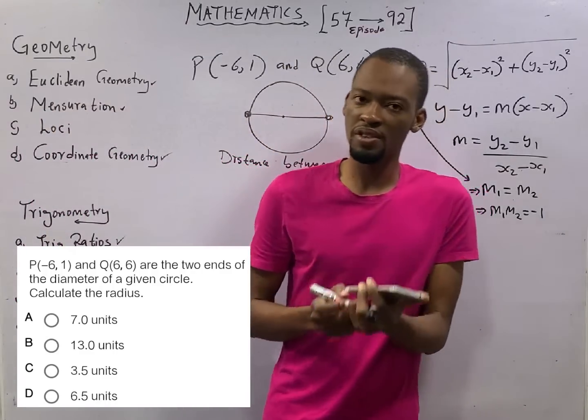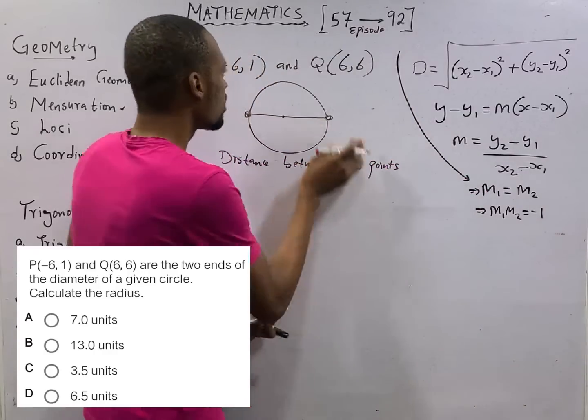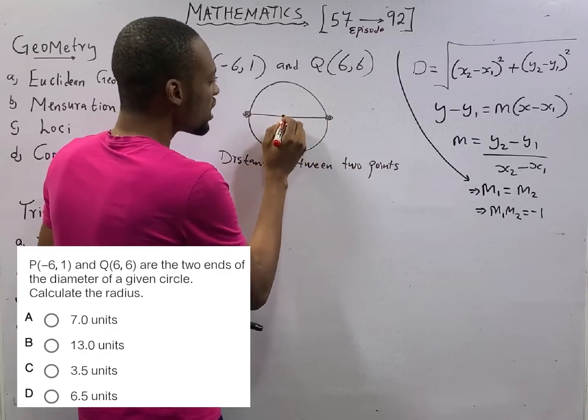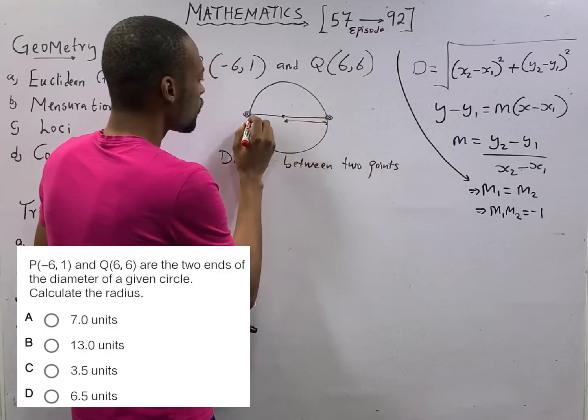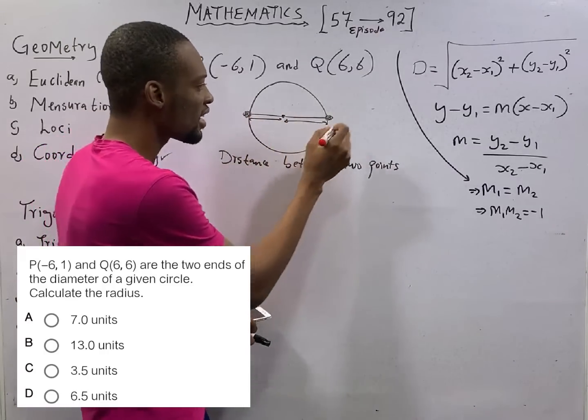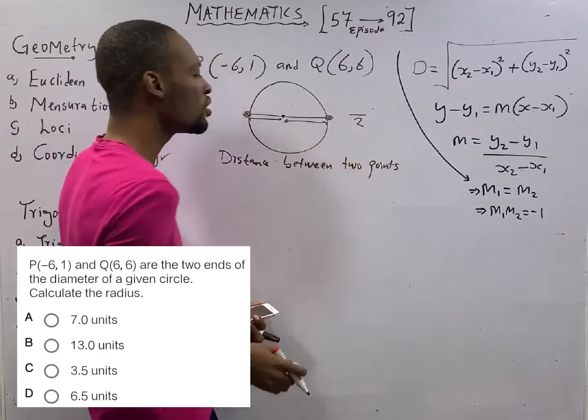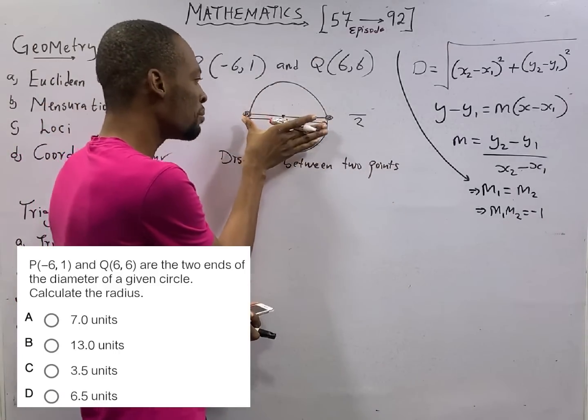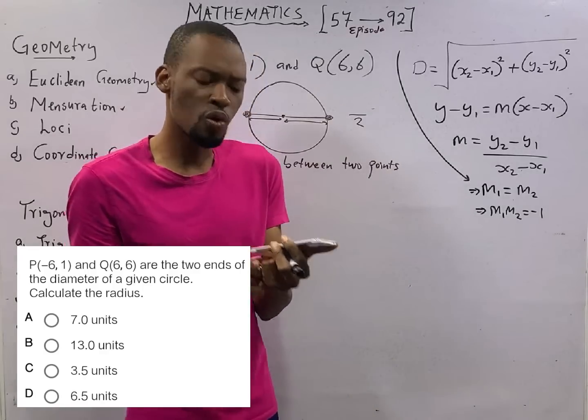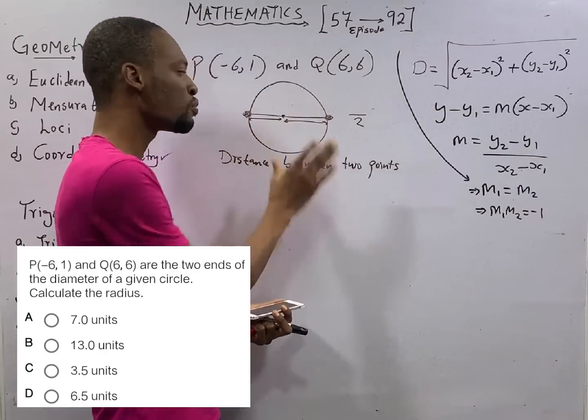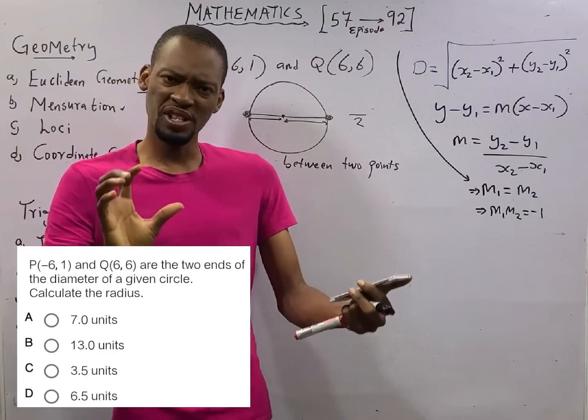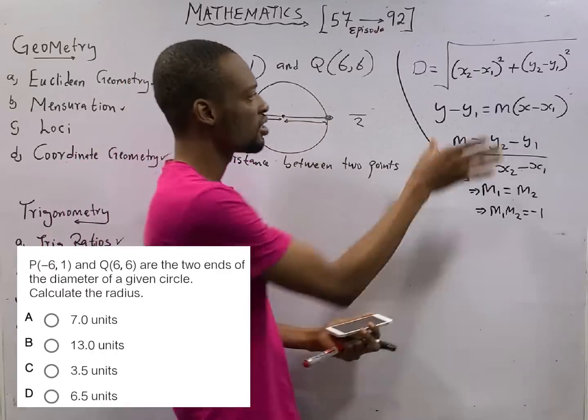But what are we asked to look for? We are asked to look for the radius. If these coordinates are distance from here to here, and from here to here is one radius, from here to here is another radius. It means if we can find this distance and divide by two, we are going to get radius. If we can find this diameter and divide by two, we are going to get radius.